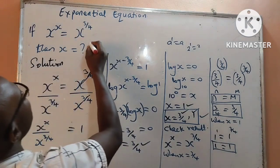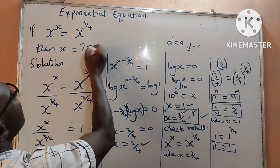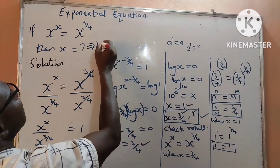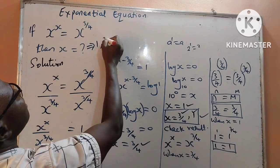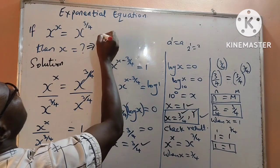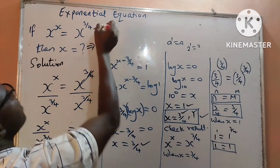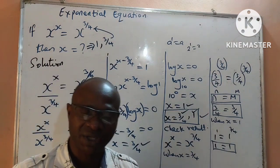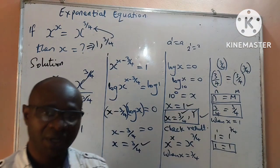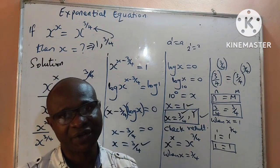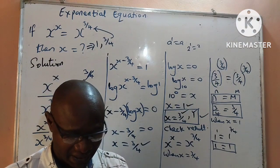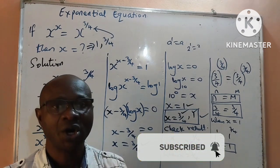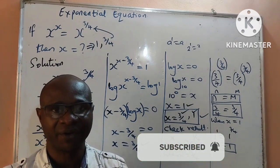In conclusion, the values of x are 1 and 3 over 4 for this question. Thank you for watching the video till the end. Do like my videos and also subscribe if it is your first time watching.